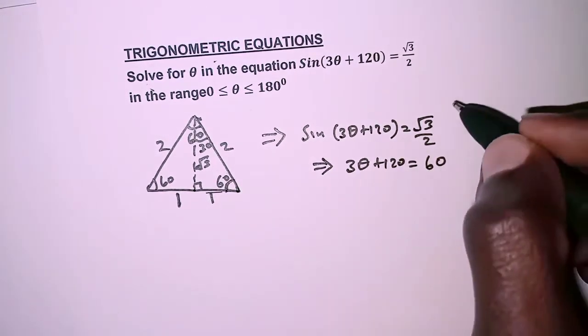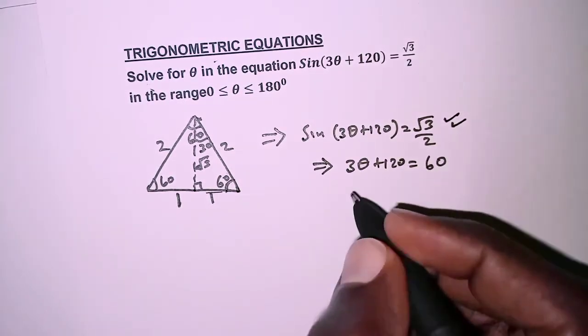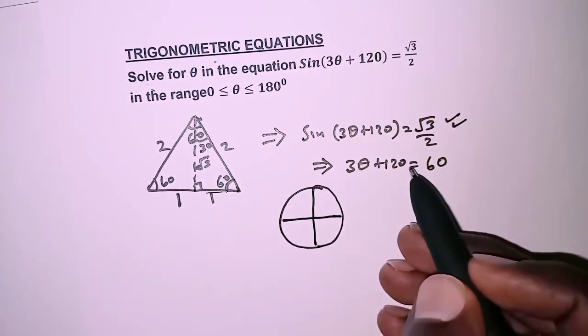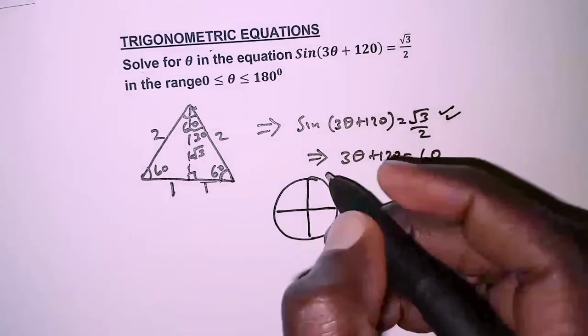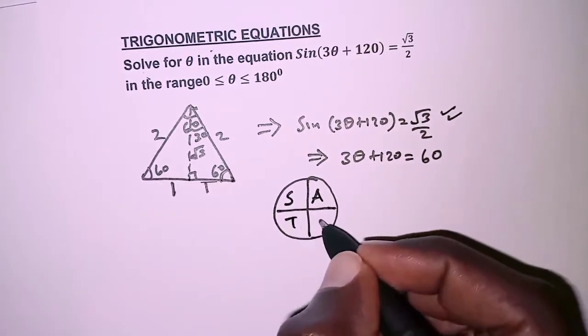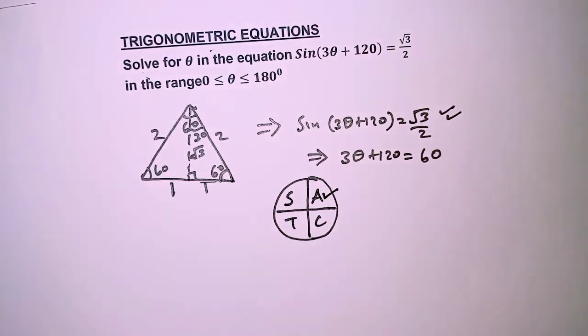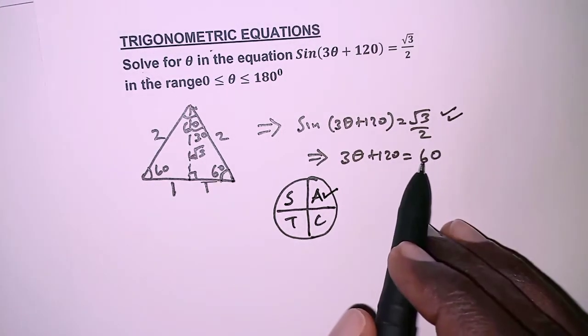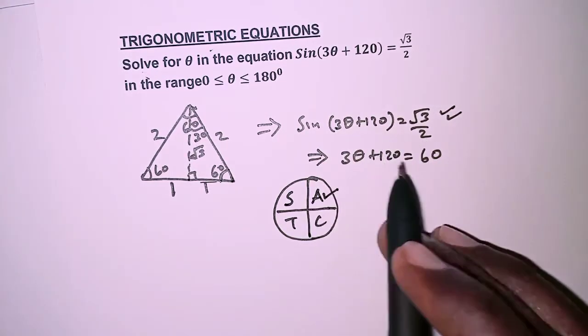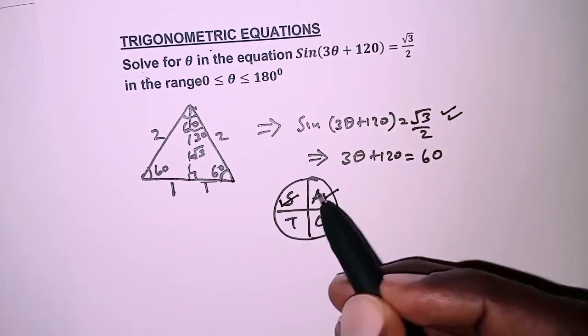Remember the sine was positive, we had positive √3/2, so that means the angle 3θ + 120 should be lying in the first quadrant. In the first quadrant all angles are acute, so 60° lies in this quadrant, and then the next one is right here where sine is positive.